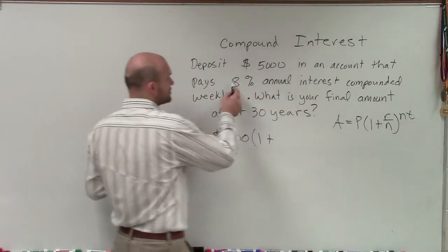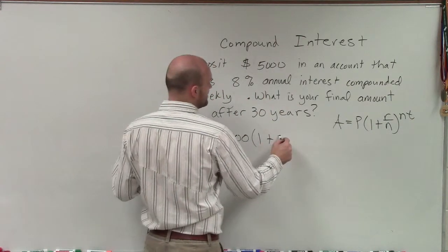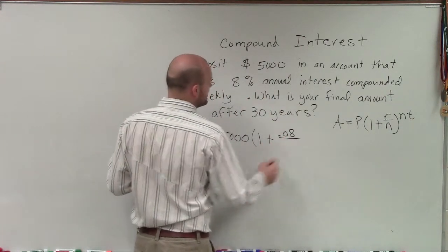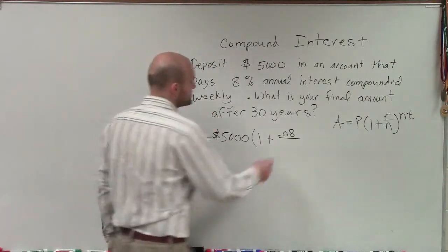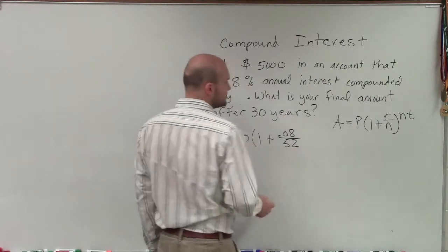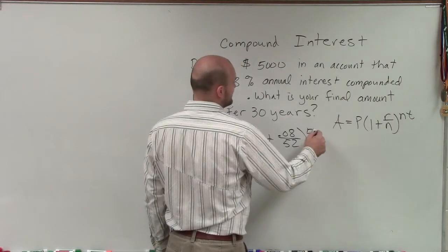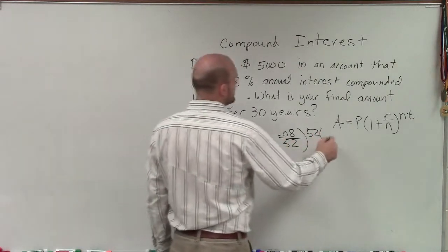We're going to take your annual interest rate, which is 8%. So we write that in decimal form. And we're going to compound that weekly. So now we need to determine how many weeks are there in the year. And when we're compounding weekly, we use 52 weeks in the year. Then we do 52 times 30 years.